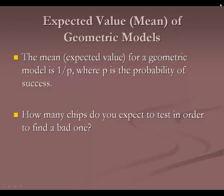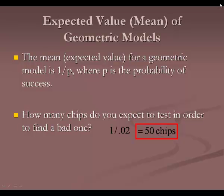The expected value of a geometric model is one divided by p, where p is the probability of success. So how many chips do we expect to test in order to find a bad one? Here p is 0.02 because finding a bad one is the successful event. One divided by 0.02 is 50 chips — another way to think about it is one out of every 50 would be bad.